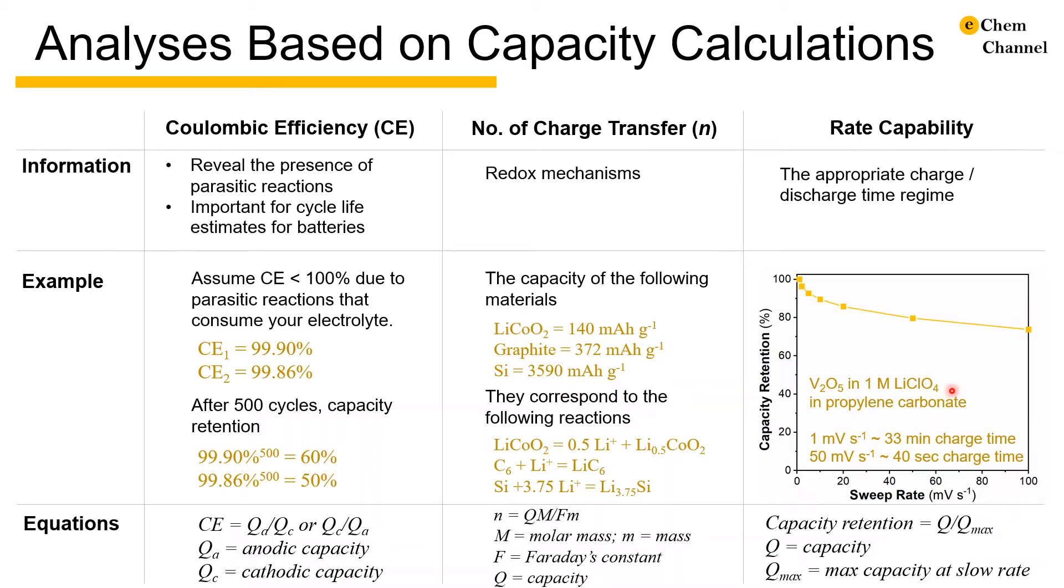If I want to achieve 80% of the maximum capacity for this material, I have to use a sweep rate of less than 50 mV per second or charge discharge time of less than 40 seconds.